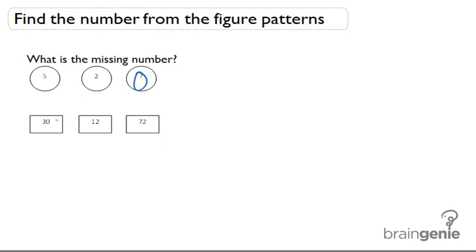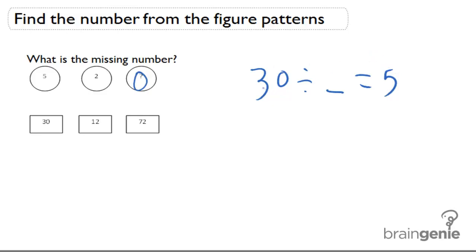So we have to figure out what divided by 30, divided by what, is going to give us 5. So we can do: 30 divided by what blank is going to give us 5? Whatever number I put here must be multiplied by whatever is here to get me 30.